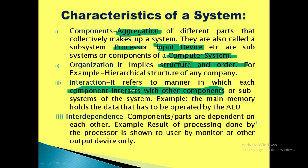Interdependence: components or parts are dependent on each other — no single component can work alone. Components are dependent on each other for achieving the common goals of the system. For example, the result of processing done by the processor is shown to the user by the monitor or another output device. Similarly, a manufacturing department, sales department, and marketing department are all different, but they are interdependent on each other for getting goods sold — that is called interdependence.